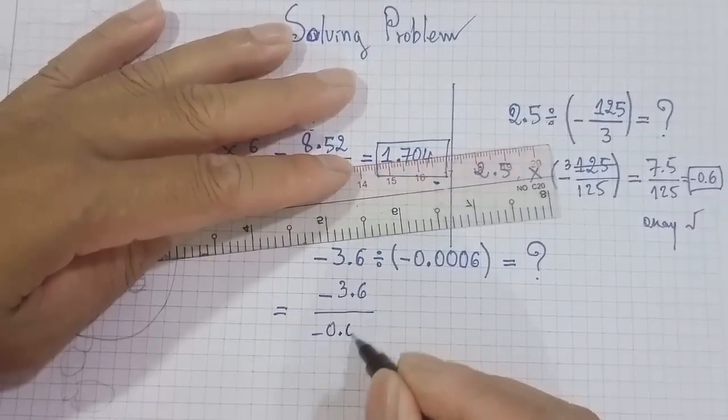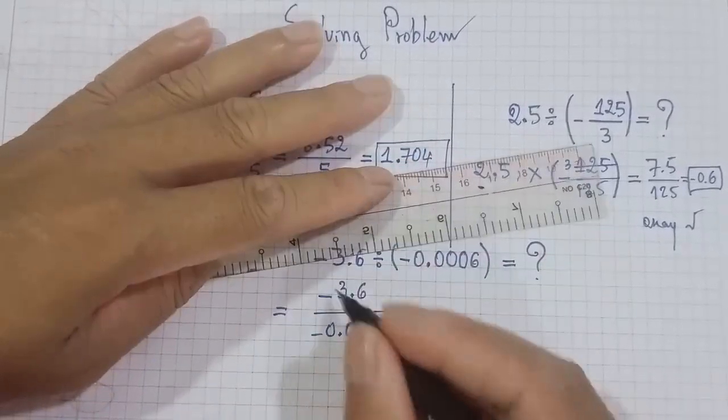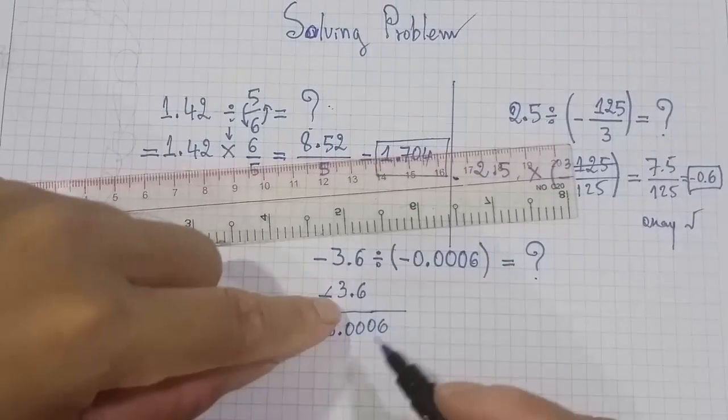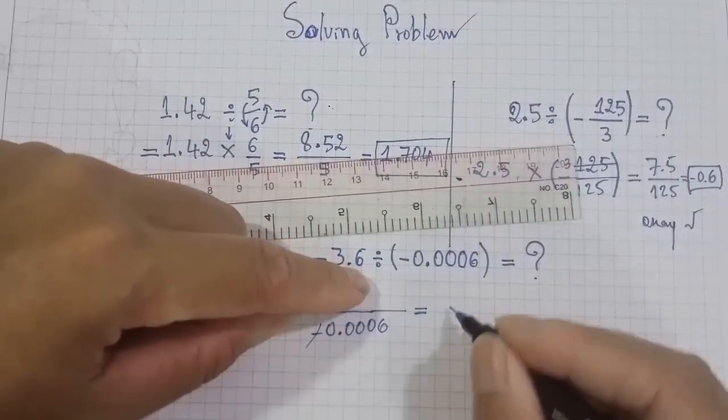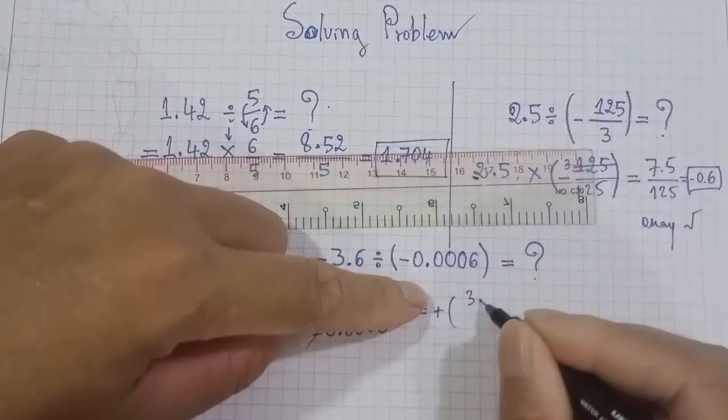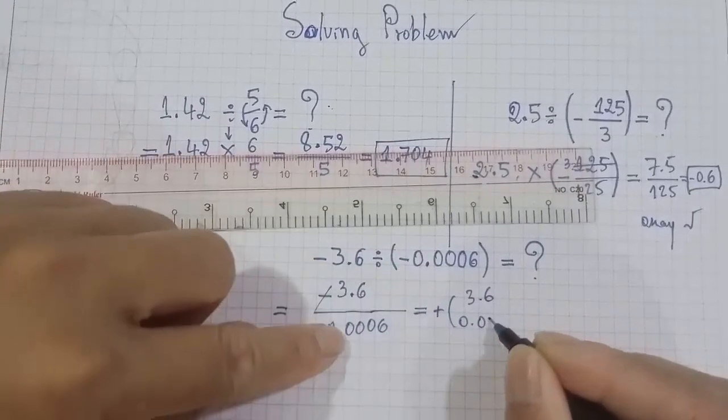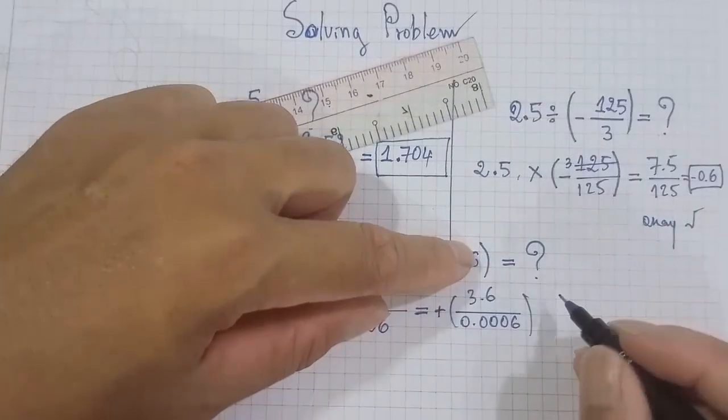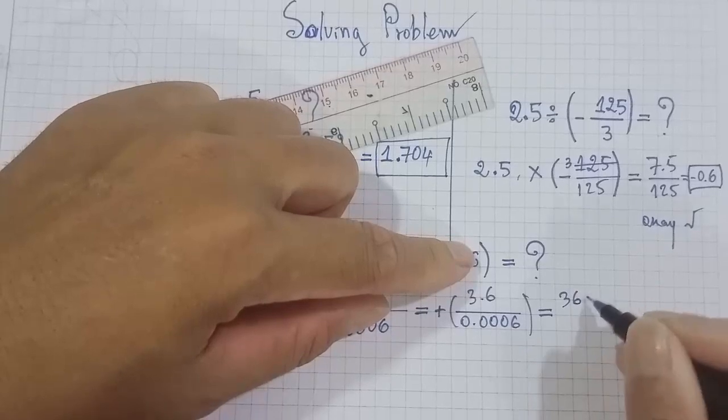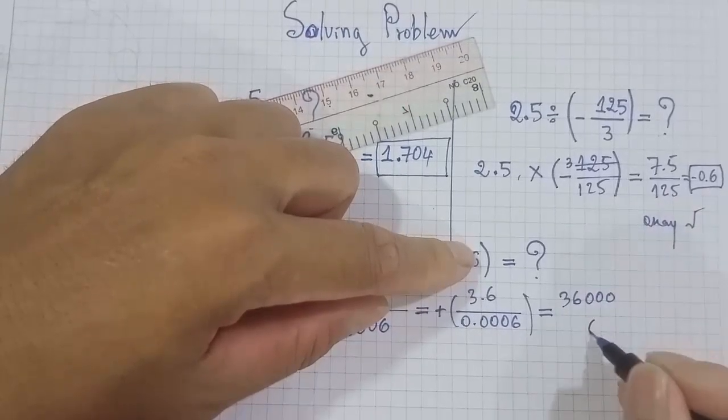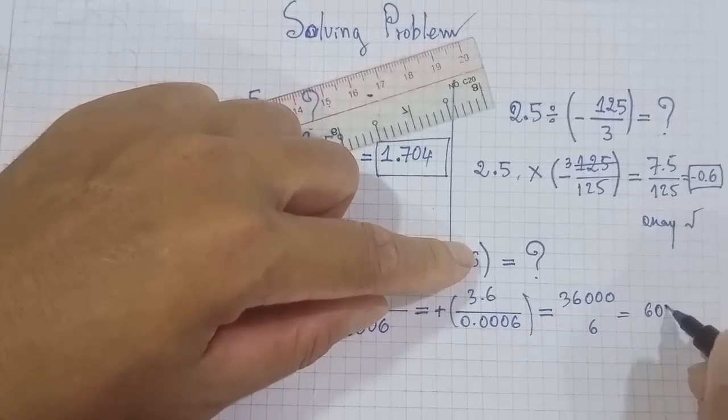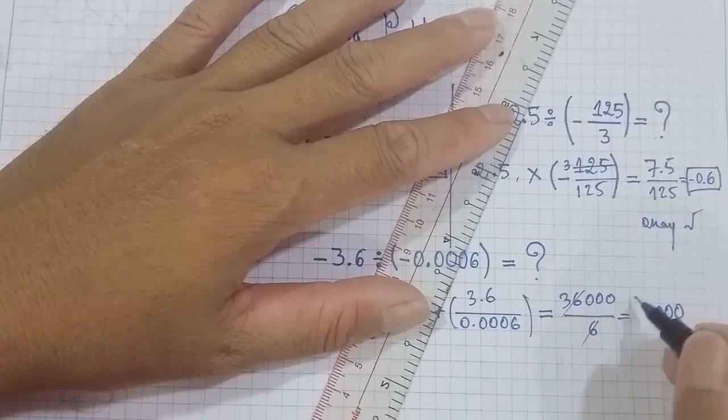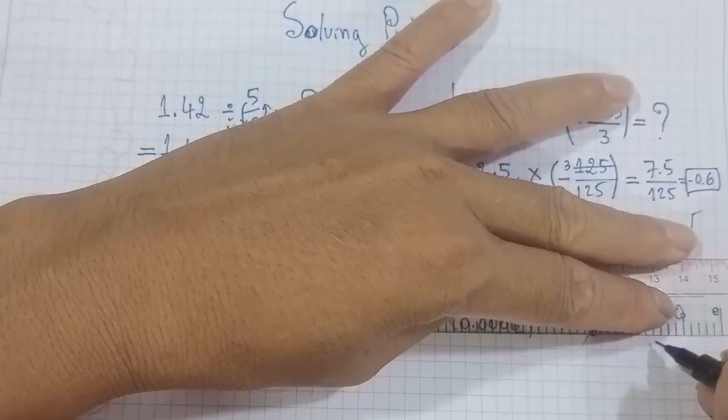Negative 3.6 divided by negative 0.0006. Decide, negative divided by negative becomes positive. So equal positive 3.6 over 0.0006, right. The same, but you can write one form. Equal 36,000 over 6, and equals 6,000. And 36 divided by 6 equals 6 with three zeros. This is the answer, easy for you.